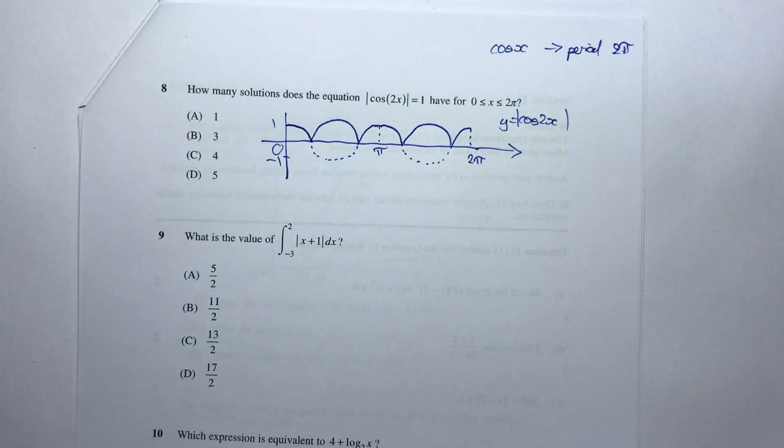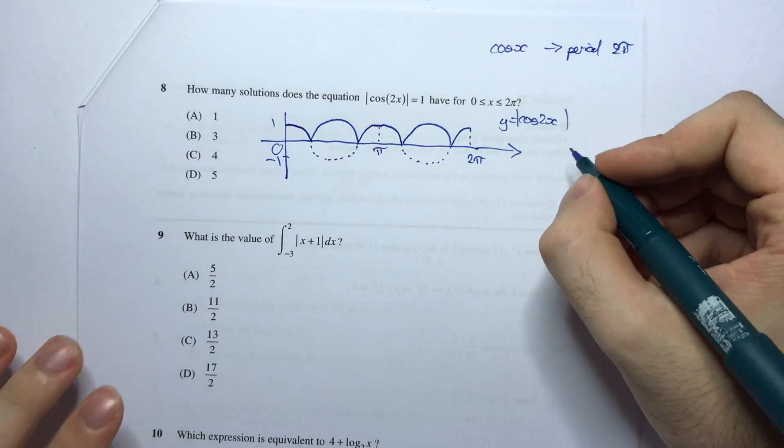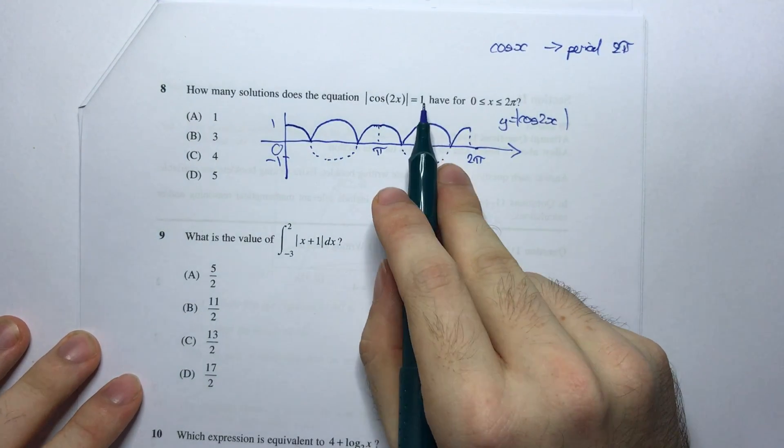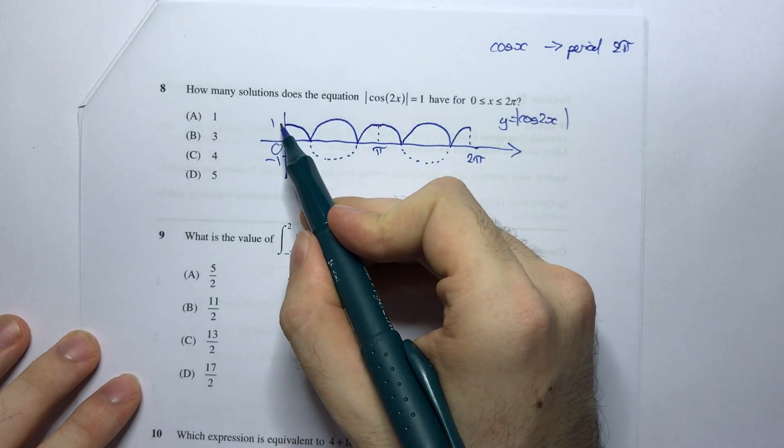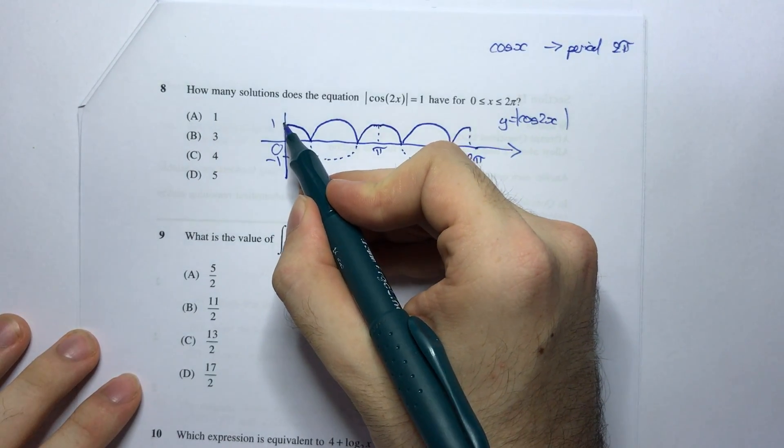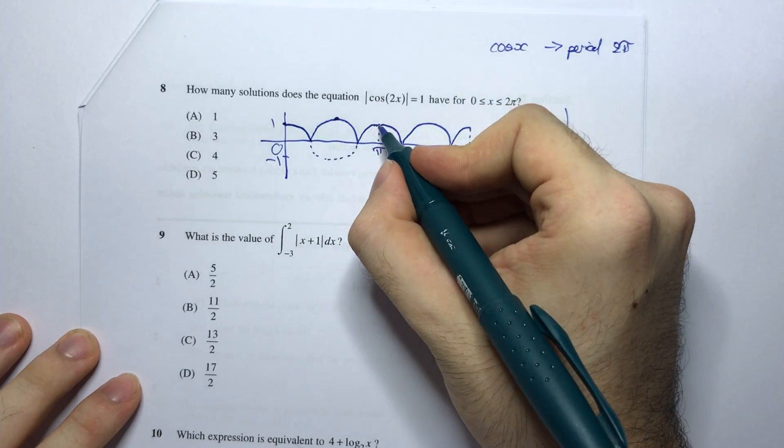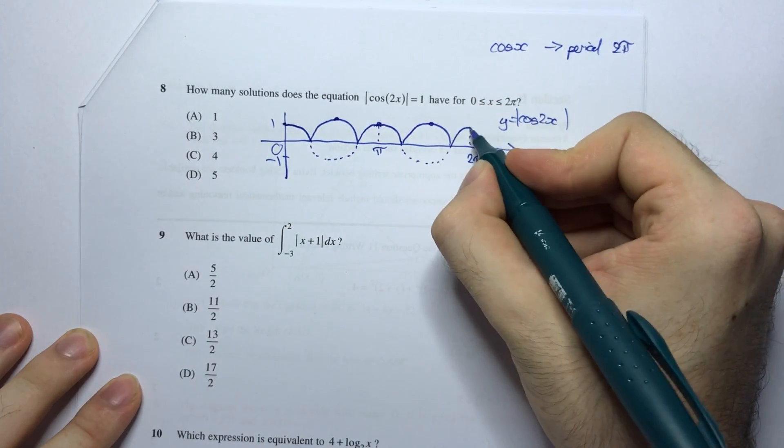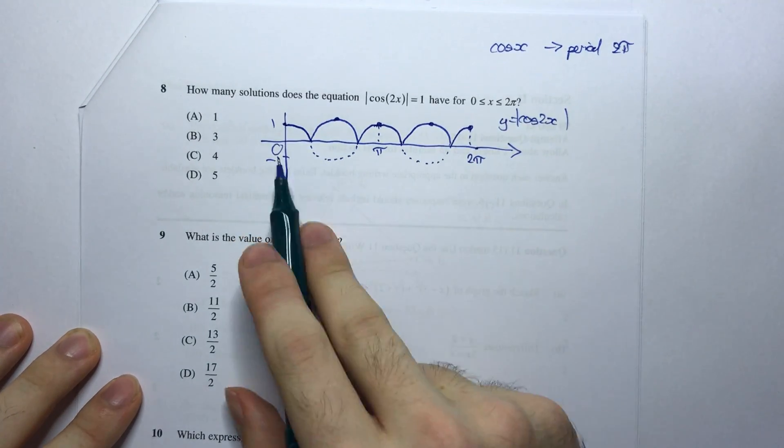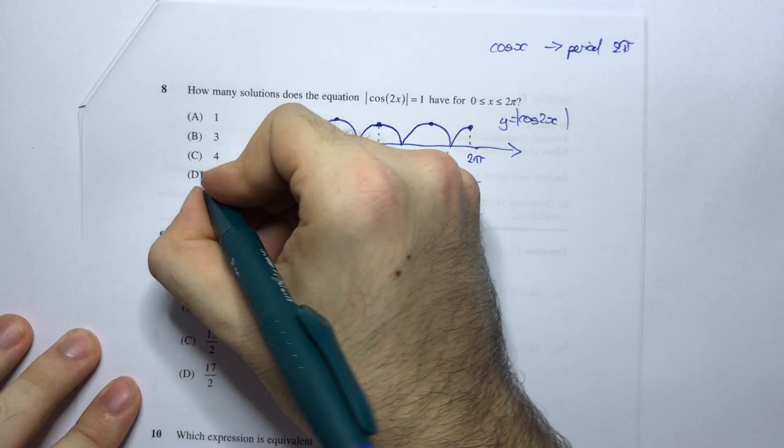And since I have this as my graph, I can now read how many times it will intercept the line y equals 1, because that's what I'm doing. I'm solving the absolute value of cos 2x equal to 1. So how many times is that? Well, assuming that I've got a nicely drawn graph, it would be once here, once here at the very top, once there, once there, and once there. And that's the entire graph between 0 and 2 pi, so that's 5 times. So my solution is going to be D.